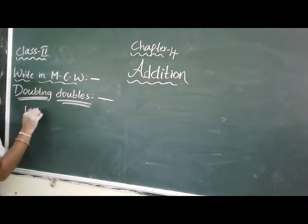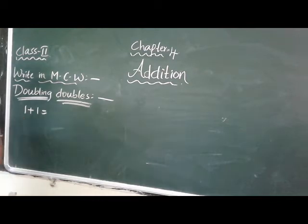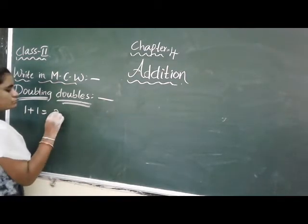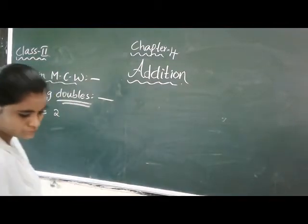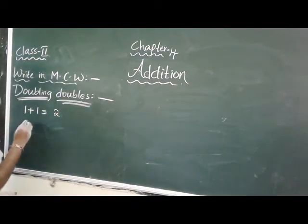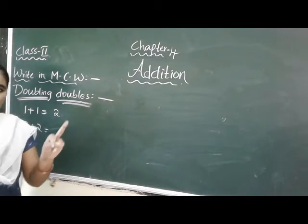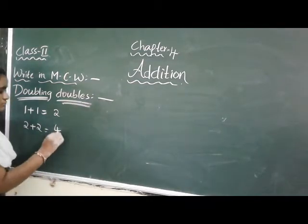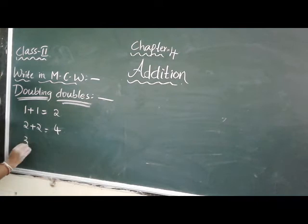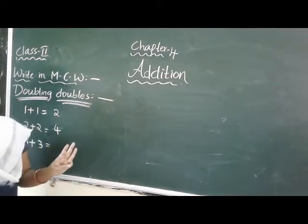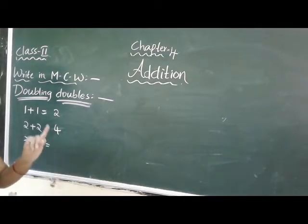1 plus 1: one finger, 1 after 2 - so 1 plus 1 equals 2. 2 plus 2: 2 in the mind, take 2 fingers, 2 after 3, 4 - so 2 plus 2 equals 4. 3 plus 3: 3 in the mind, take 3 fingers, 3 after 4, 5, 6 - so 3 plus 3 equals 6.